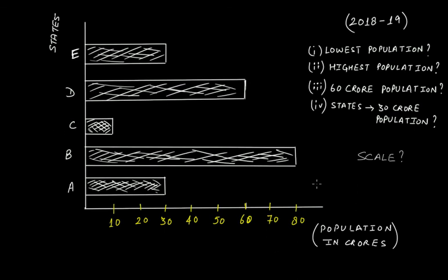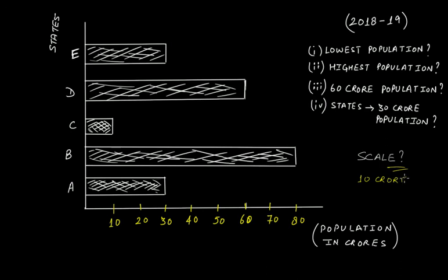Now let's look at a second bar graph showing the population in crores of states A, B, C, D, and E of a country. Here the population is plotted on the horizontal line and the states are on the vertical line, so the bars are projected horizontally. The numbers shown are 10, 20, 30, 40, 50, 60, 70, and 80 crores. The scale of this graph is 10 crores per unit length, since each interval increases by 10 crores.